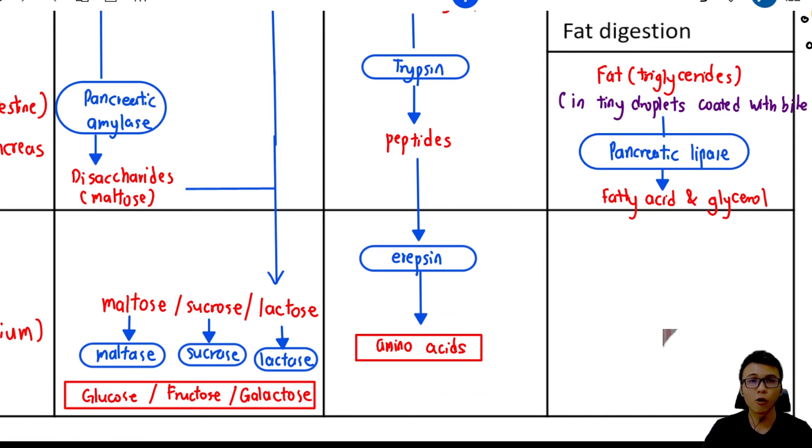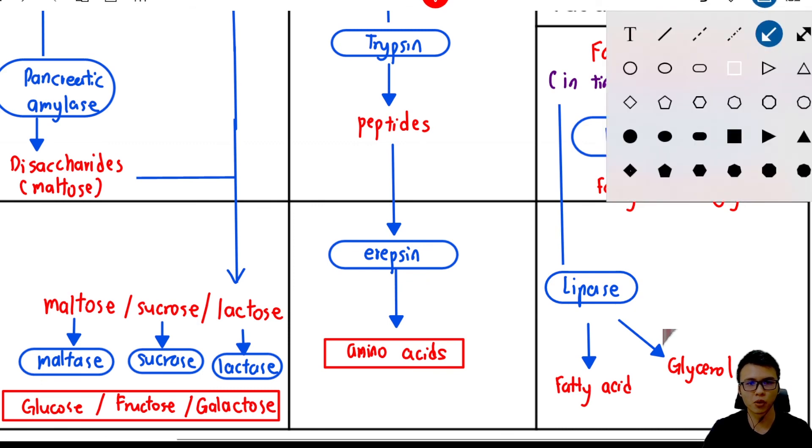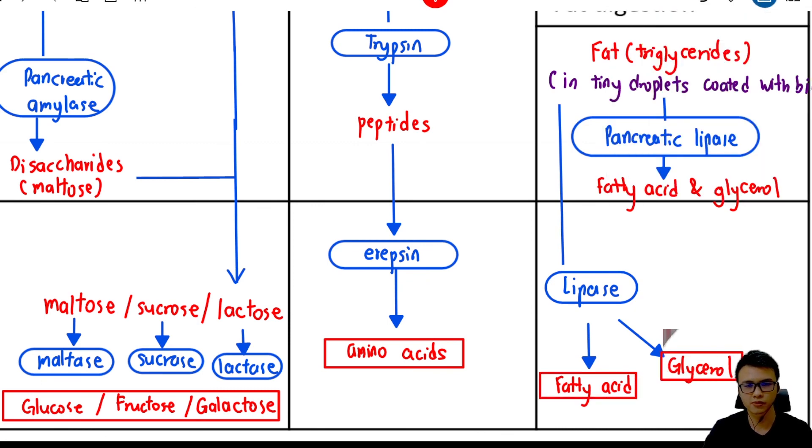Remember that not all the fat will be digested in the duodenum. Some of the fat will still remain as fat and will go to the small intestine. Here, the fat will again be digested by lipase that is secreted by the intestinal epithelium to form fatty acid and glycerol. The fatty acid and glycerol are the monomers of fat.